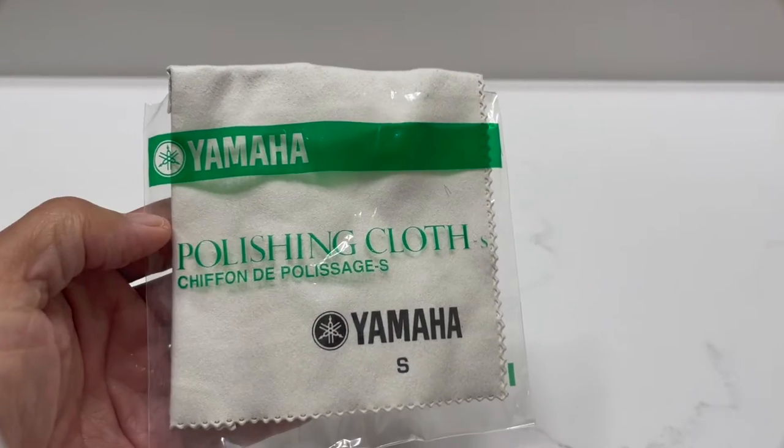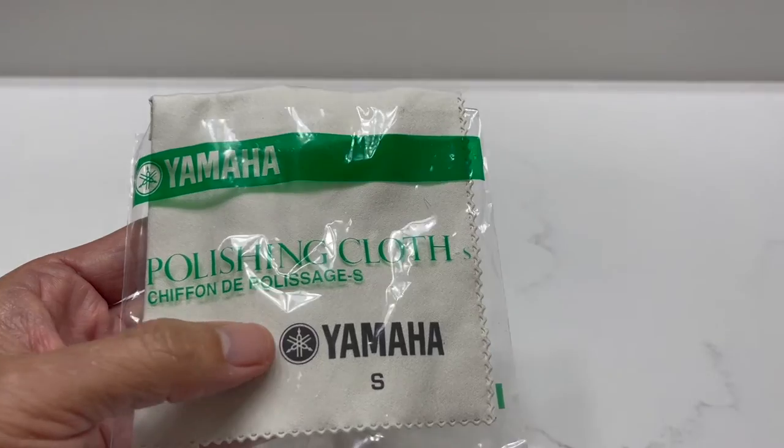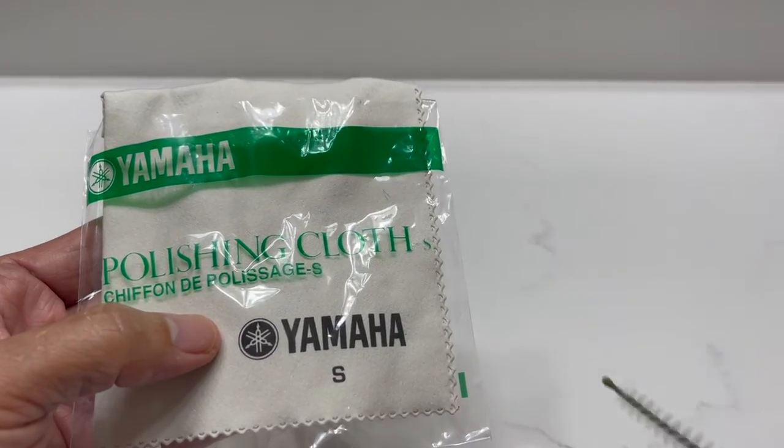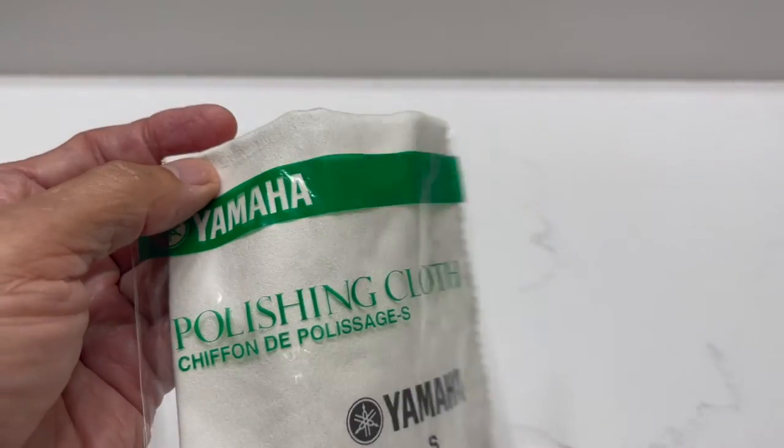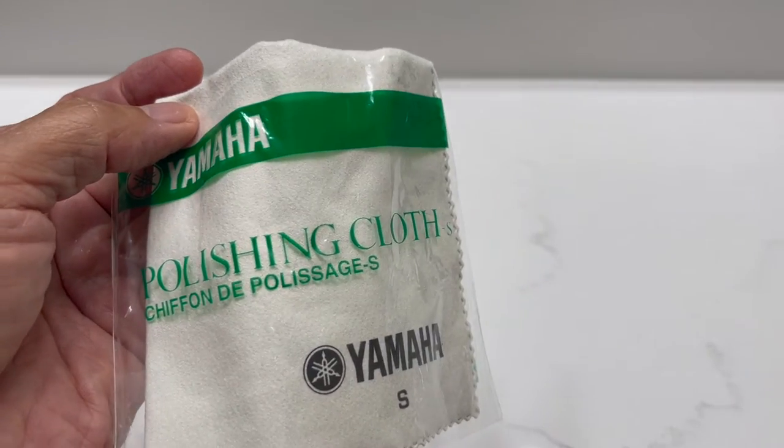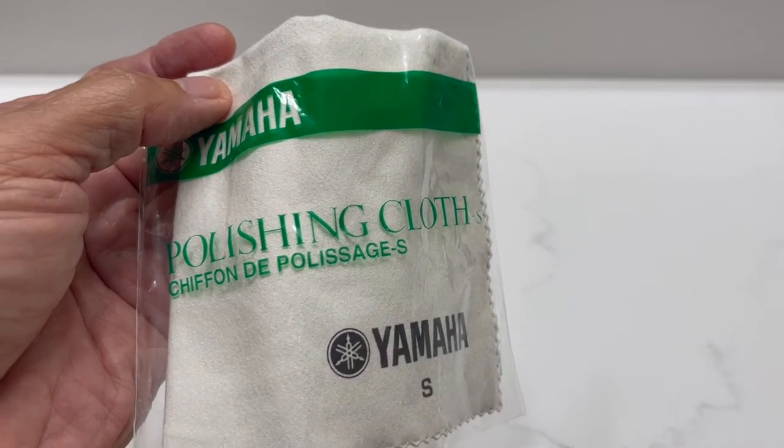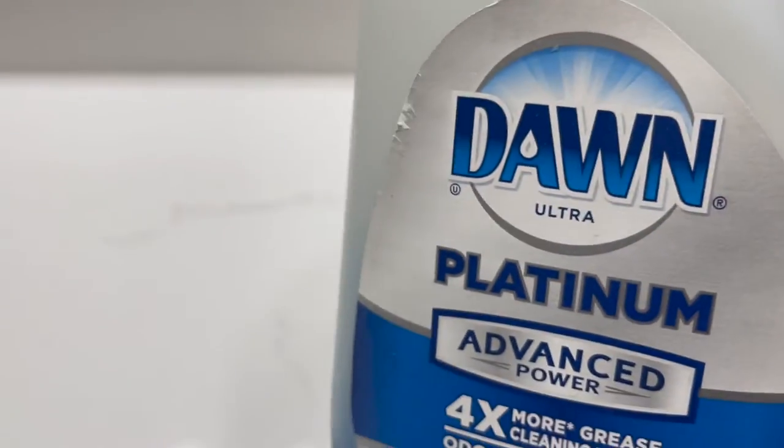Next thing we'll need is a nice cloth to dry this off. I like this Yamaha Polisher Cloth. Again, it came in the kit that this thing came in with. It's almost like a light chamois and it soaks up the water and it's nice and soft so it won't put fine scratches on the surface of the mouthpiece. The other thing we're going to need is some dish soap. I like Dawn. It's simple. It's a degreaser. It washes away very easily and it comes in really big bottles.